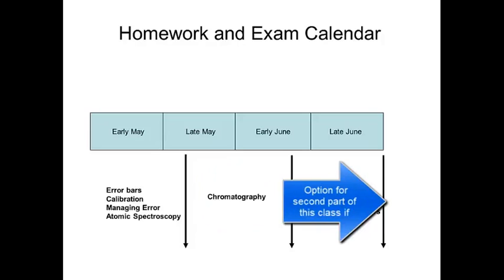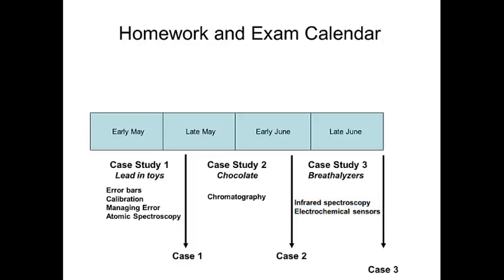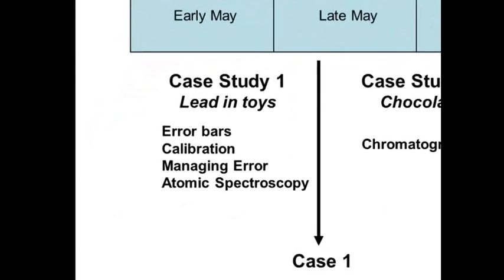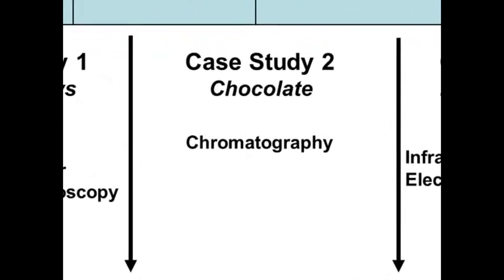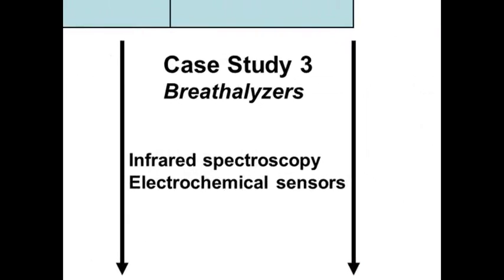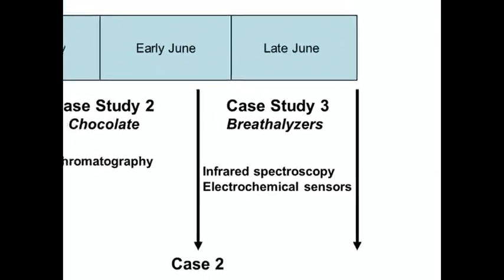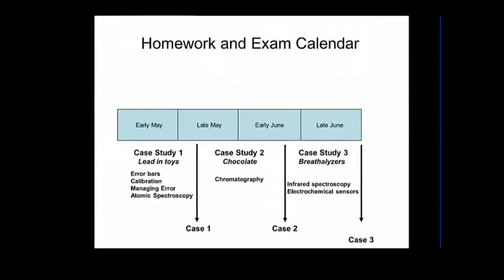I chose those topics not just to choose random instruments, but because we're going to be exploring them through case studies. The first case study we're going to do is lead in toys. That's a really interesting case study. It brings up issues of sample preparation, as well as the limits of detection of instruments, and how accurate and precise our measurements can be, and really the context of a measurement of lead in things like baby toys. Then we're going to transition to chromatography, where the case study will be chocolate. And then finally, at the end, breathalyzers. Each of these case studies will be due every couple of weeks.